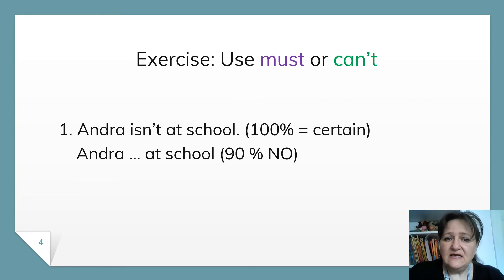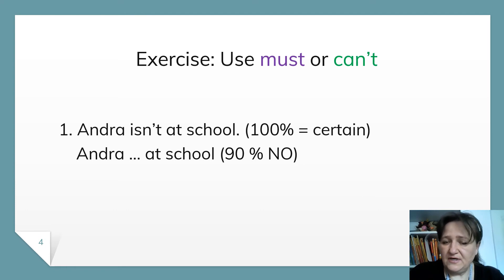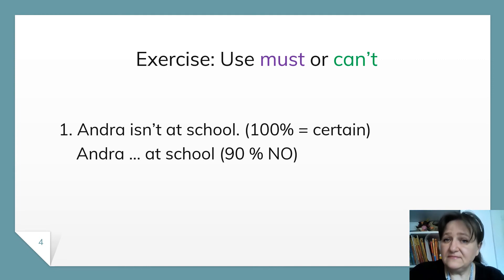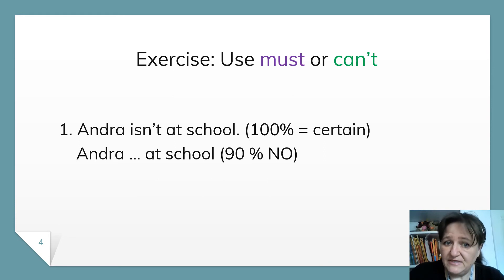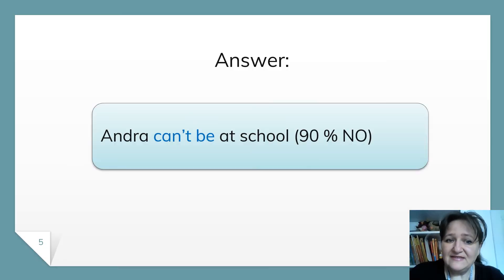Let's see some exercises. Use must or can't, please. Andra isn't at school — here I am 100% certain. Now use a modal verb to express 90% no. Andra can't be at school. Very well, bravo. Can't be.